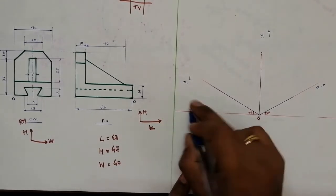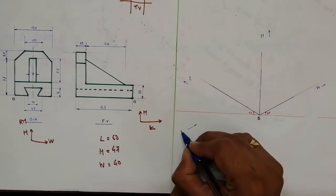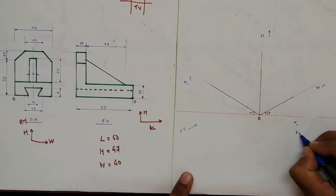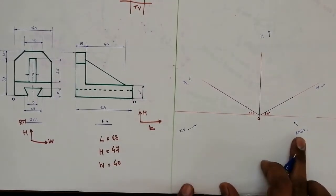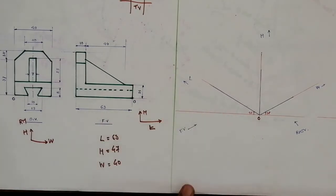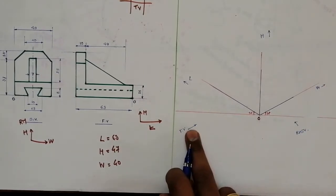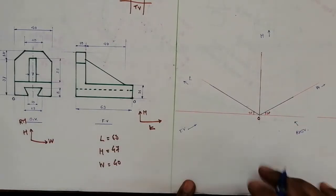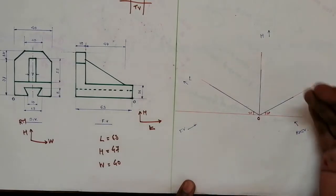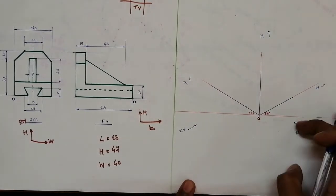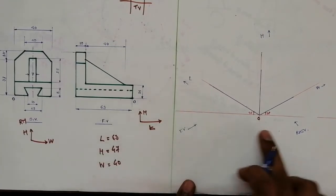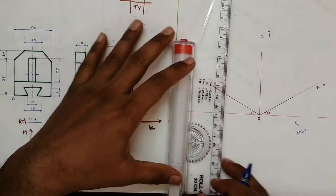Wherever the length is taken, we get the front view, and in the width direction we get the right hand side view. We have to be very careful while drawing the isometric view when the side view is given. If you take length to the left, this is front view and this is right hand side view. If you take length to the right, then this becomes left hand side view. Since the problem gives right hand side view, we take length to the left. Now complete the three dimensional box.